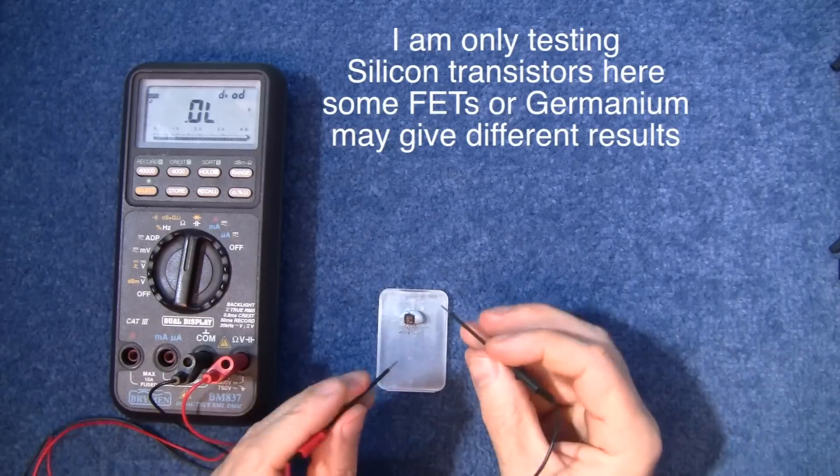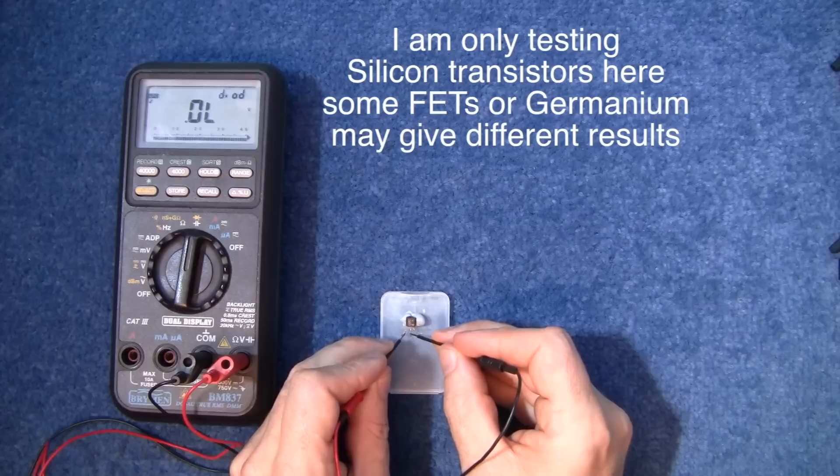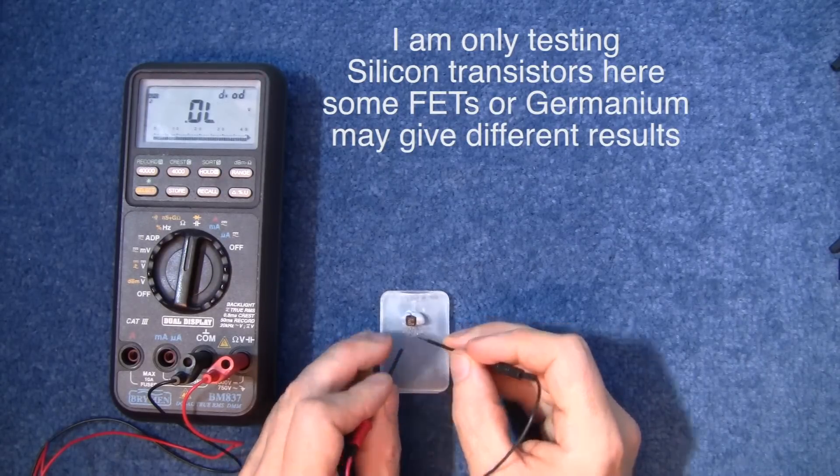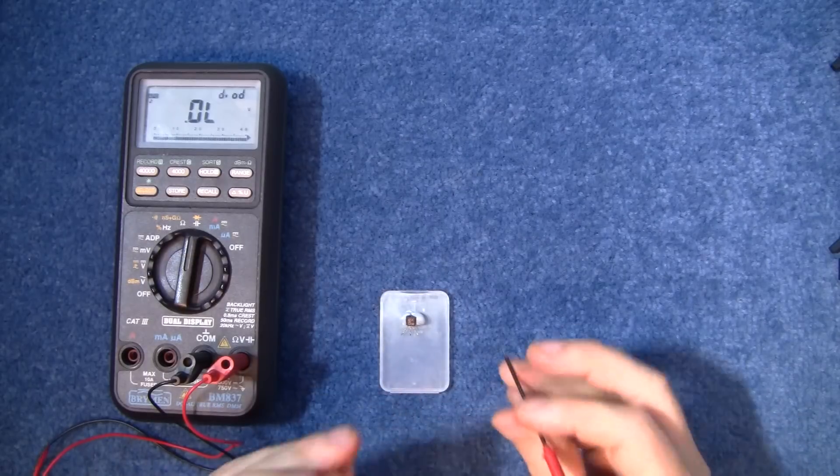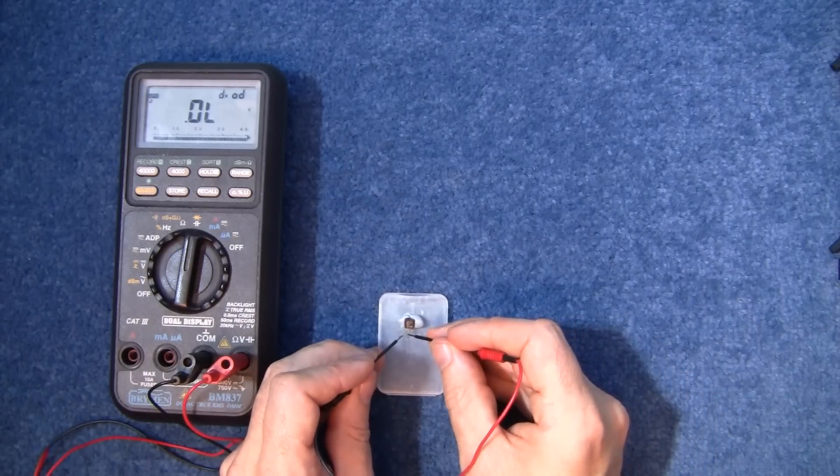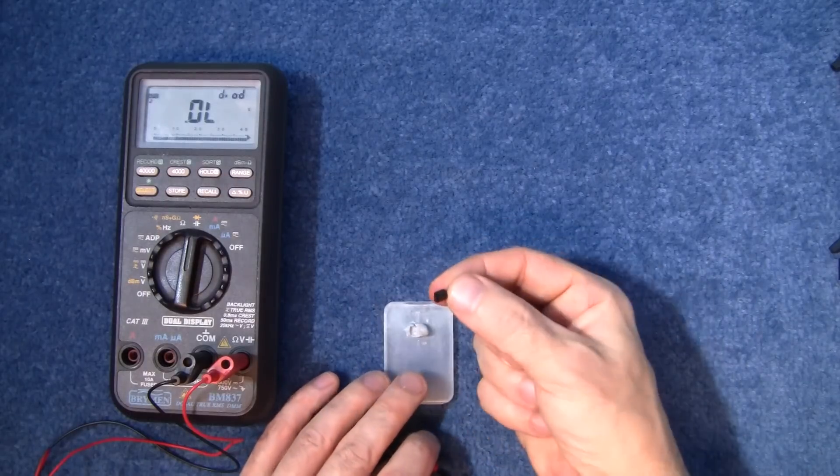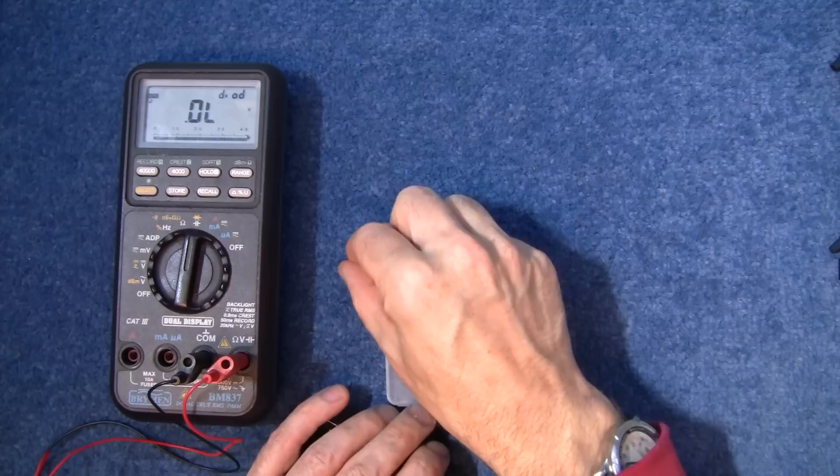So with your leads just check between the contacts of the transistor, nothing between any of them, swap them over, try them all again, nothing at all, no readings whatsoever. So therefore that transistor is dead.